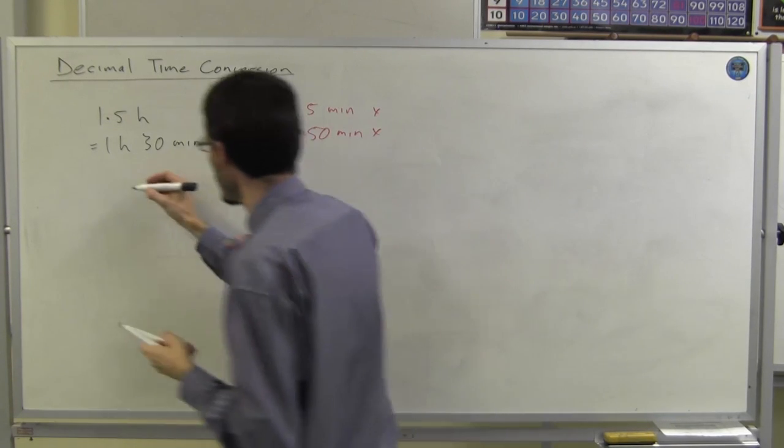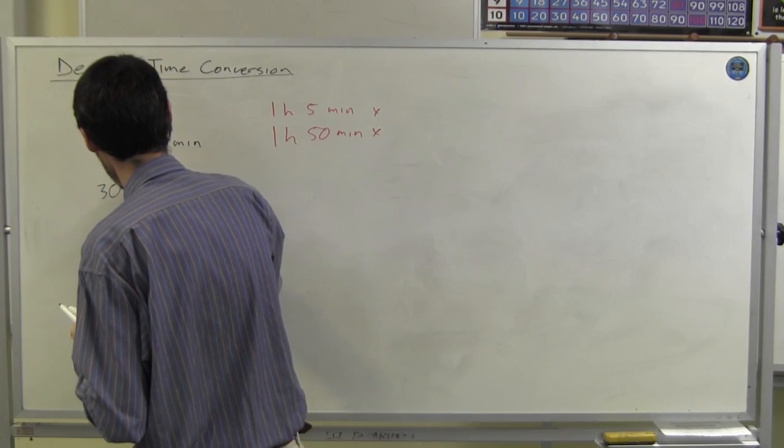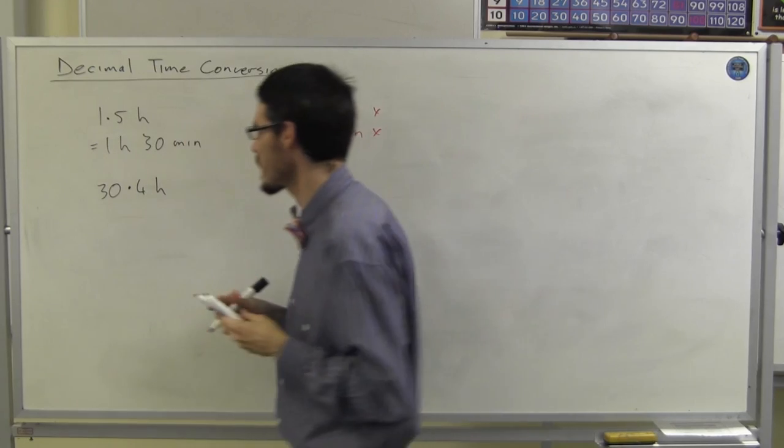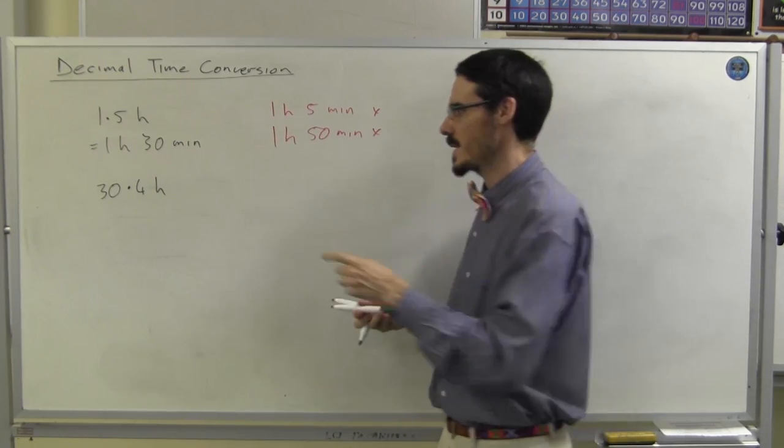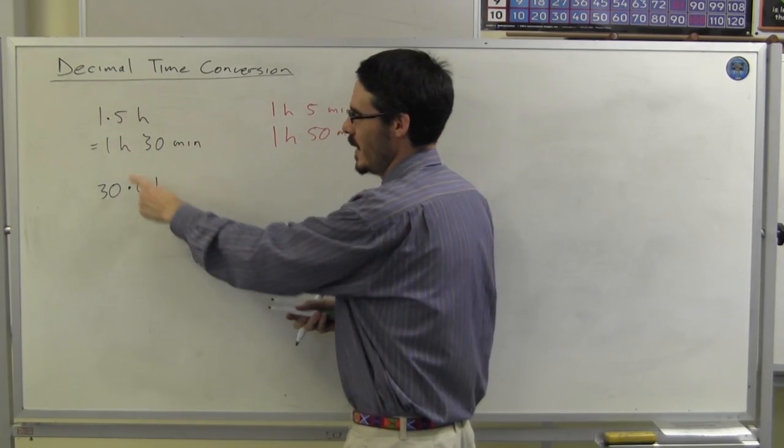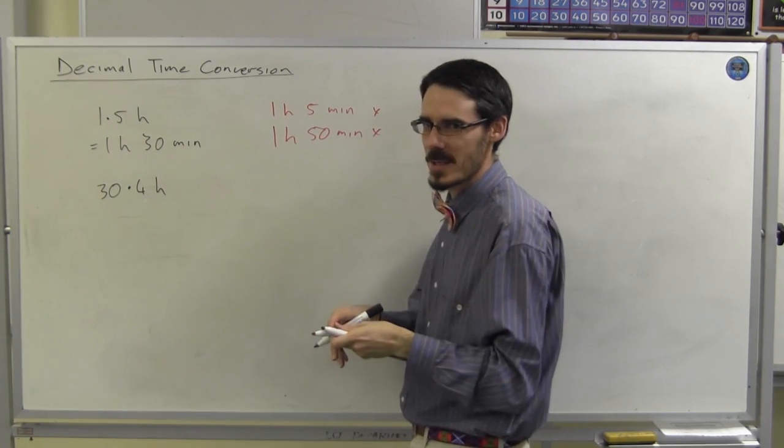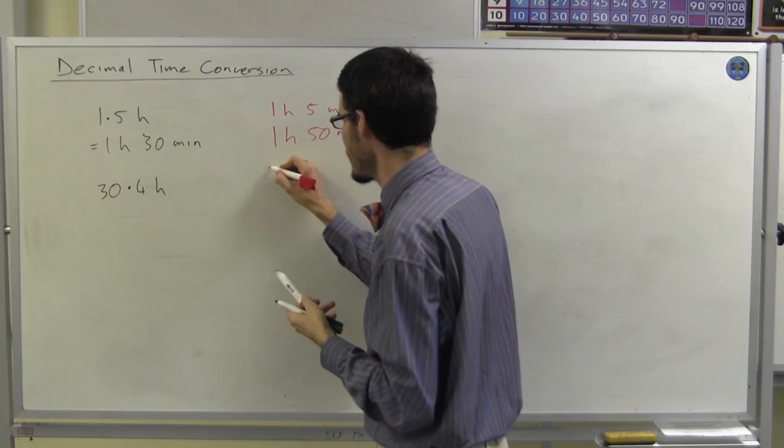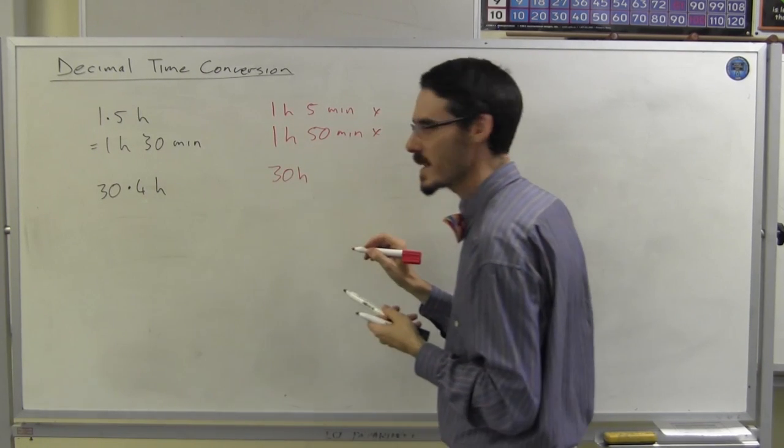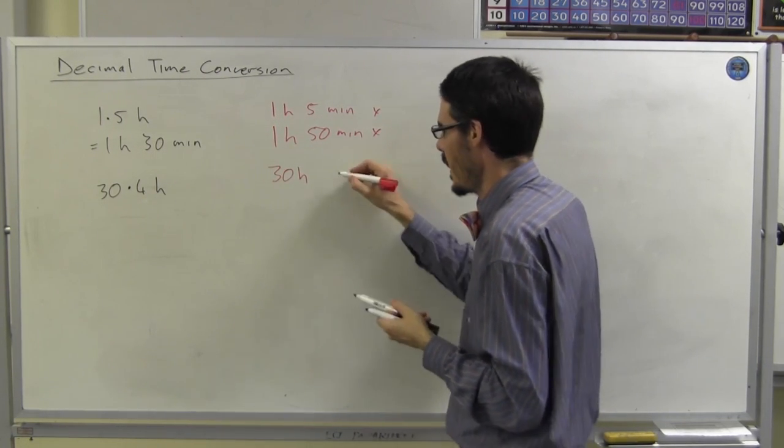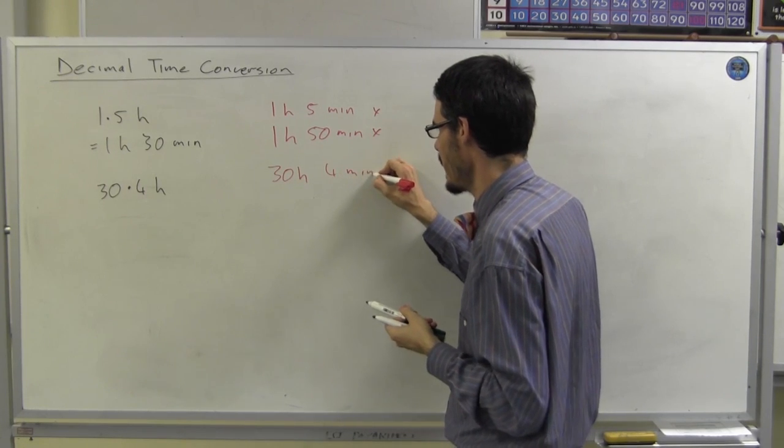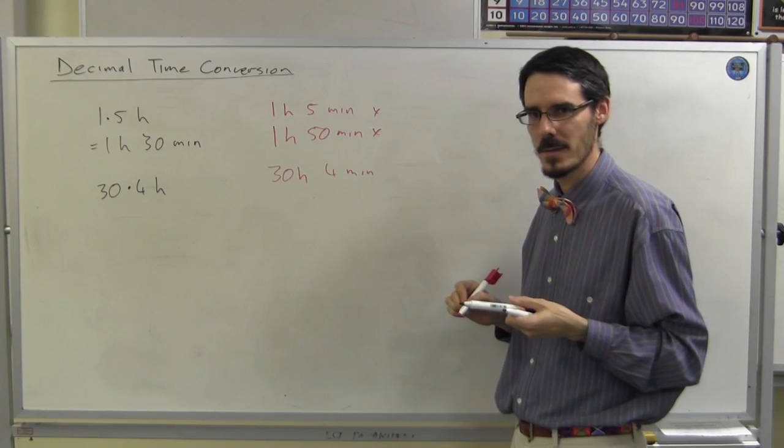And yet, when I go 30.4 hours, because it is no longer obvious, 0.5 is a half, 0.4 is different. I sometimes get students trying to tell me that this is 30 hours and 4 minutes. No, it isn't.